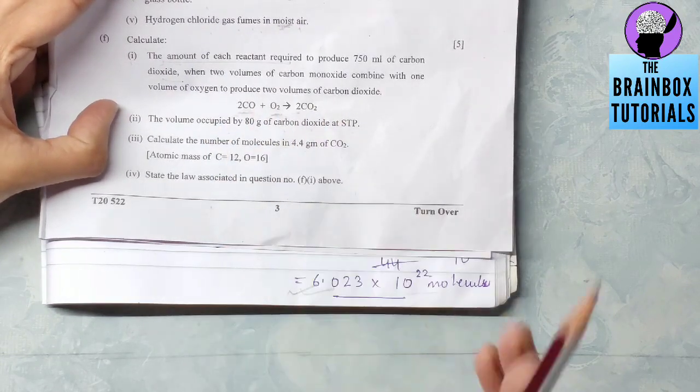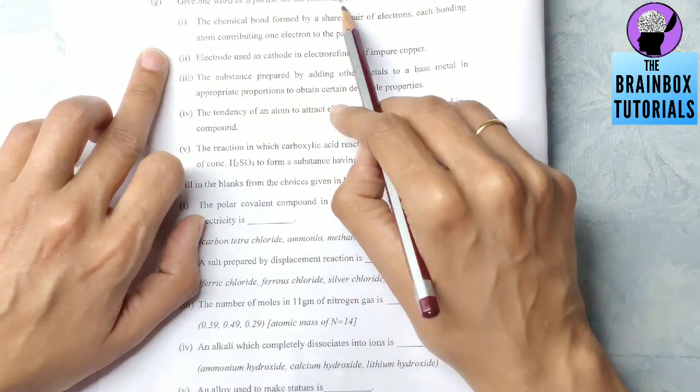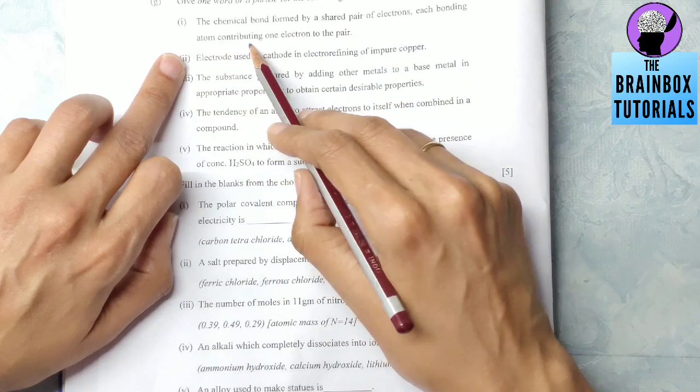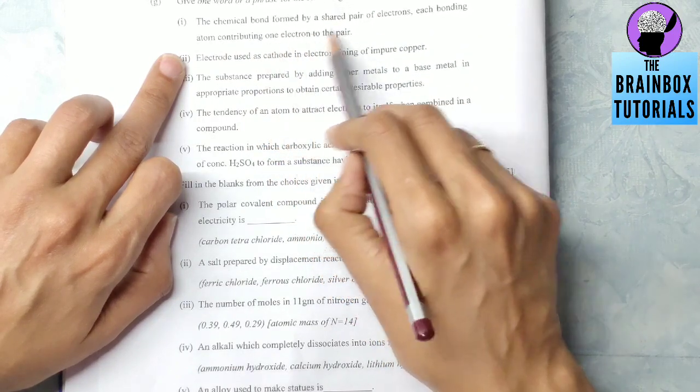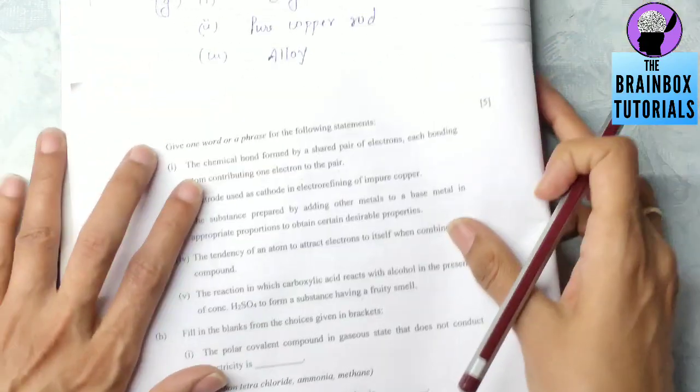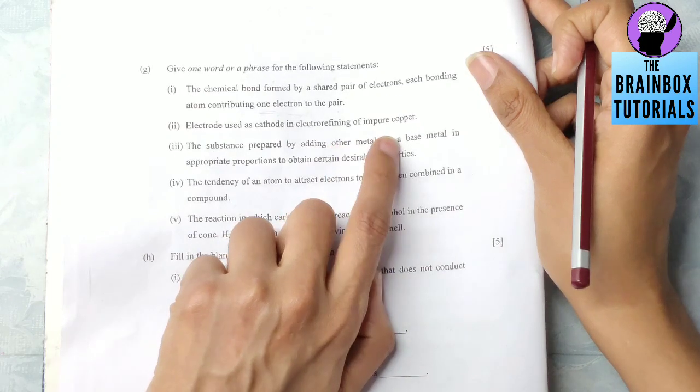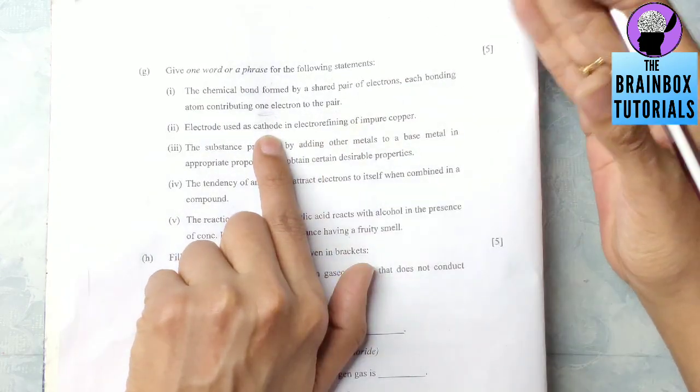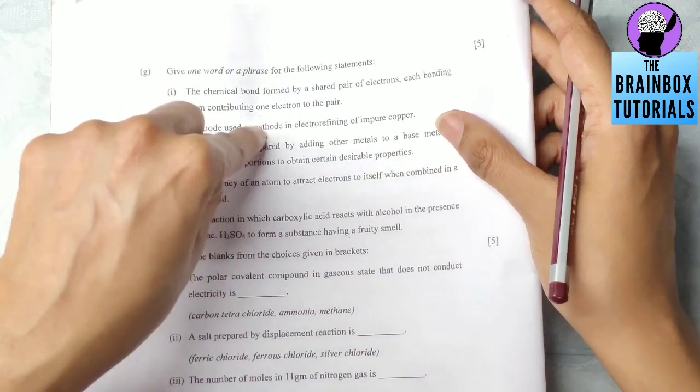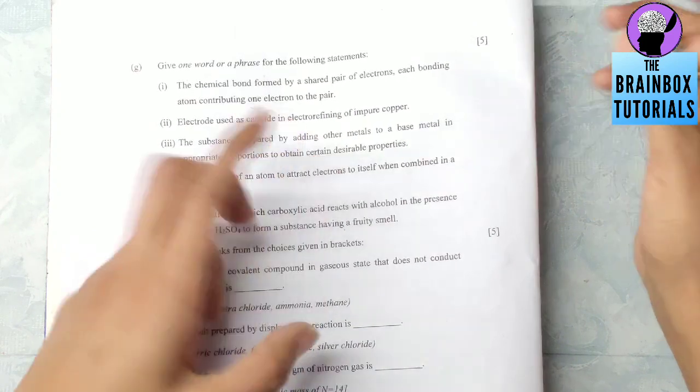Question G: Give one word or a phrase for the following statement. First one: chemical bond formed by a shared pair of electrons, each bonding atom contributing one electron to the pair. They are sharing, that means it's a covalent bond, and each electron contributing, so single covalent bond. Next: electrode used as a cathode in electrorefining of impure copper. Cations migrate towards cathode, pure copper, so in cathode also pure copper should be there - pure copper rod. Number three: the substance prepared by adding other metals to a base metal in appropriate proportion to obtain certain desirable properties. The answer will be alloy.